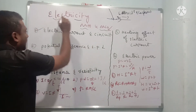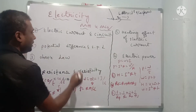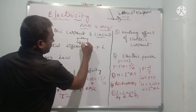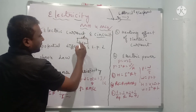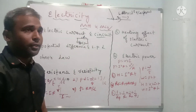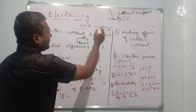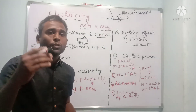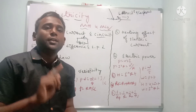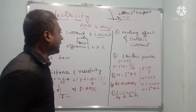Now we understand about electric current and ampere. Coming to electric circuit — it is the schematic diagram that shows different components like resistor, rheostat, voltmeter, ammeter, etc., and shows the path of the current. That is called an electric circuit. In a simple circuit we have a resistor, a battery with a big line as positive terminal and small line as negative terminal, and a closed plug key.